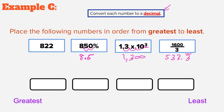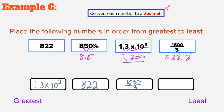Now we put them in order from greatest to least. 1,300 is way more than 822, 533, and 8.5, so our greatest is 1.3 times 10 to the third. Next is 822, then 1,600 thirds or 533.3 repeating, and finally 850% or 8.5. Remember to write these back in original form. That's the end of Example C and this set of notes. If you liked the video throw us a thumbs up, if you loved it subscribe, and we'll catch you in the next one.